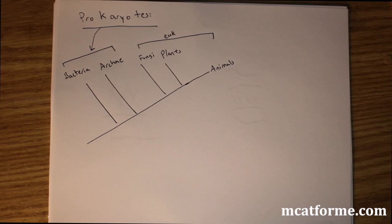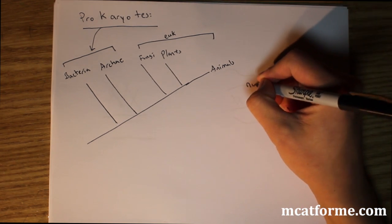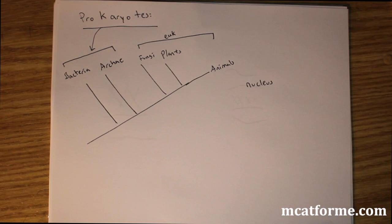And so one of the biggest distinguishing factors between prokaryotes and eukaryotes is the nucleus. Prokaryotes have no nucleus and eukaryotes have a nucleus. That's one thing we kind of have to get out of the way.